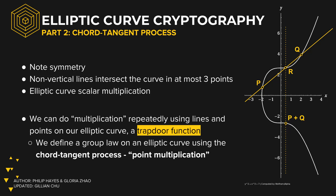Any non-vertical line on this curve will intersect the curve in at most three points. On the graph on the right-hand side, the line through points P and Q intersects at point R. On this elliptic curve, we can do point addition using lines and points. To add P and Q, we simply draw a line through them intersecting at a third point R, then reflect point R across the x-axis, yielding our result P plus Q. This is called the chord tangent process.